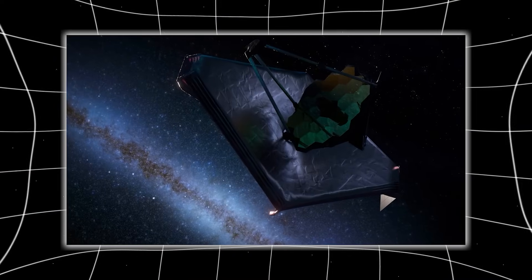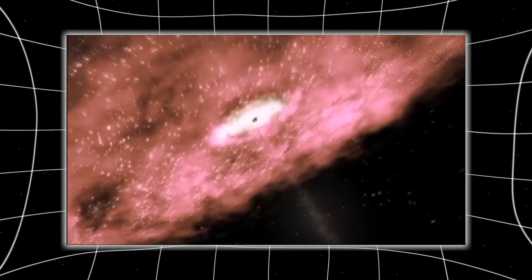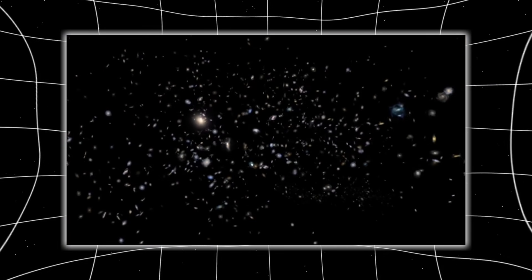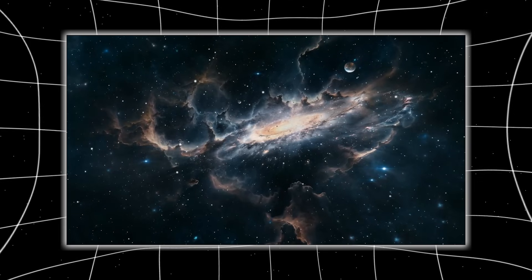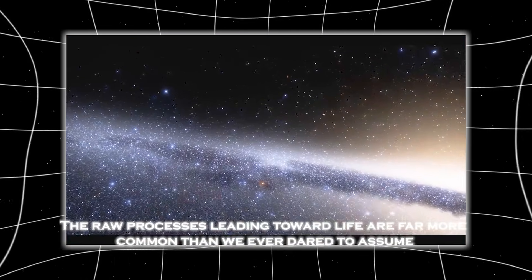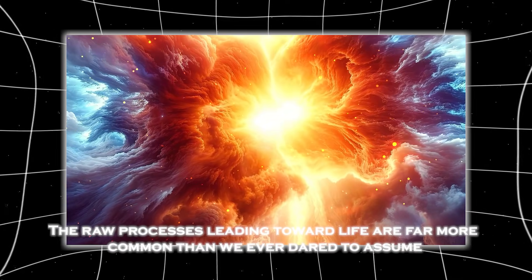James Webb is showing us a universe that is opportunistic, fast and remarkably efficient at creating complexity wherever energy and time intersect. This does not mean the cosmos is filled with life. But it does mean that the raw processes leading toward life are far more common than we ever dared to assume.